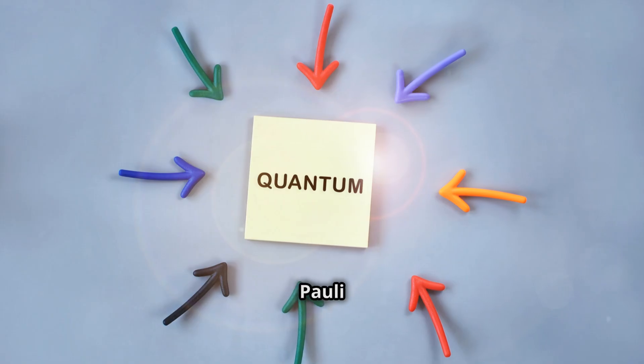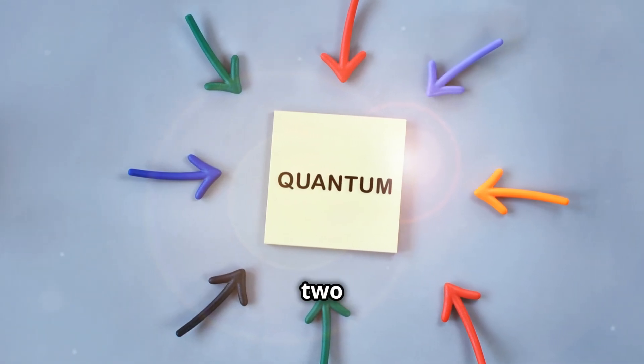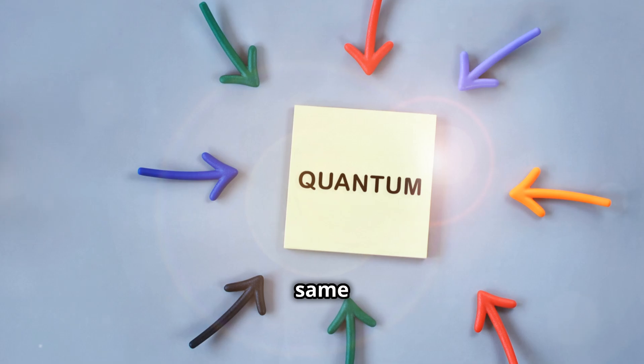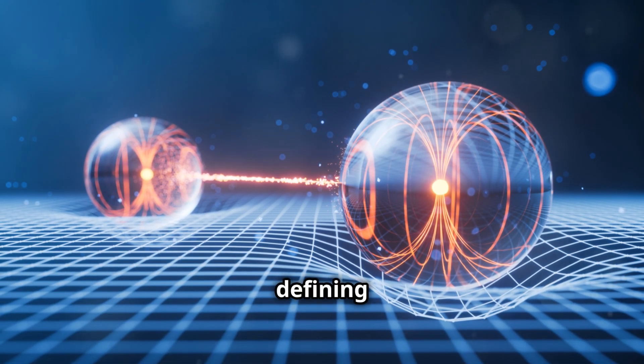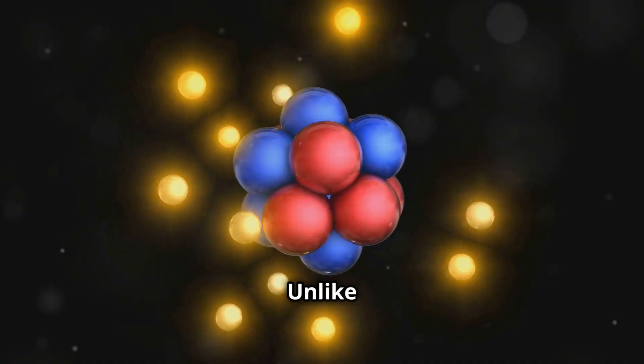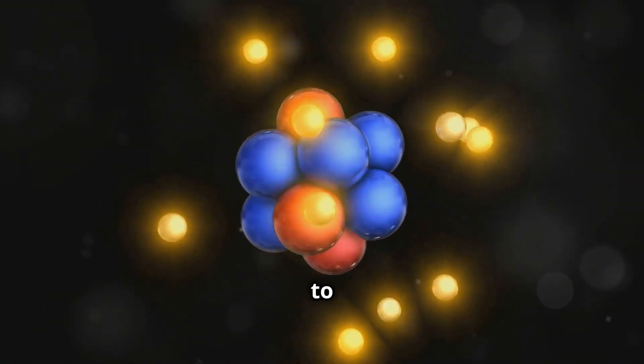Fermions are particles that follow the Pauli exclusion principle, meaning no two fermions can occupy the same quantum state simultaneously. This principle is crucial in defining the structure of matter. Unlike quarks, leptons are not subject to the strong force.